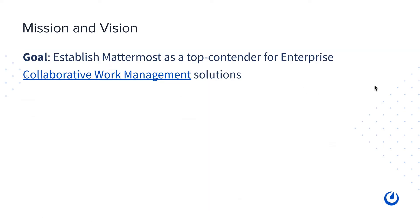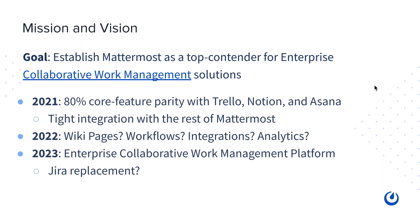Let's talk about the three-year vision of FocalBoard. The long-term goal is to establish Mattermost as a top contender in enterprise collaborative work management. In year one, 2021, our goal is to achieve 80% core feature parity with reference applications Trello, Notion, and Asana — meaning we want to build the features that 80% of those users care about. We also want to start building towards tight integration with the rest of Mattermost, investing month after month in blurring the lines between FocalBoard and the rest of Mattermost.